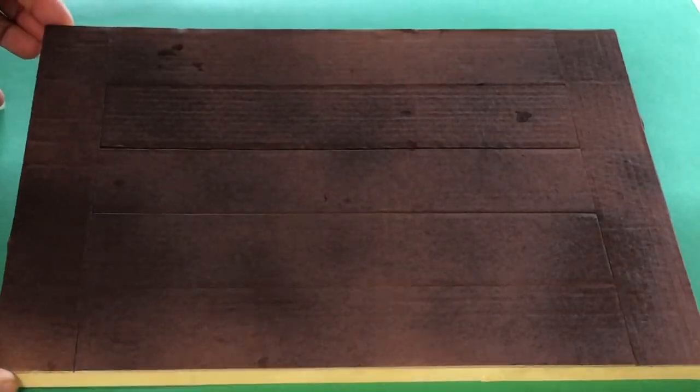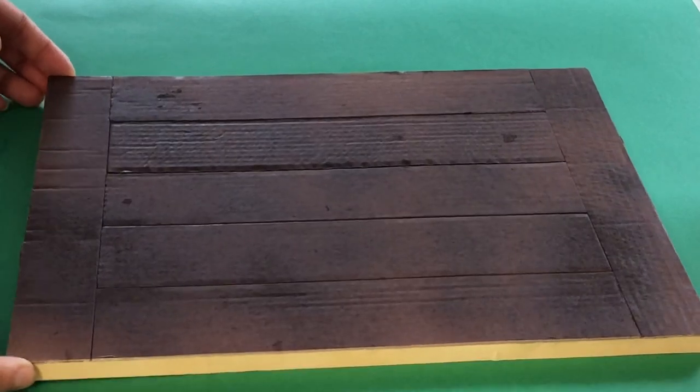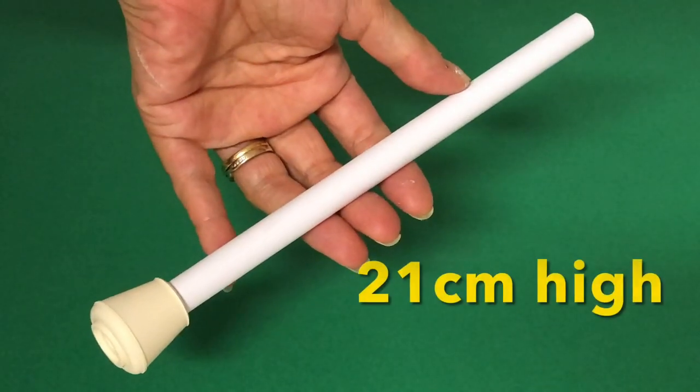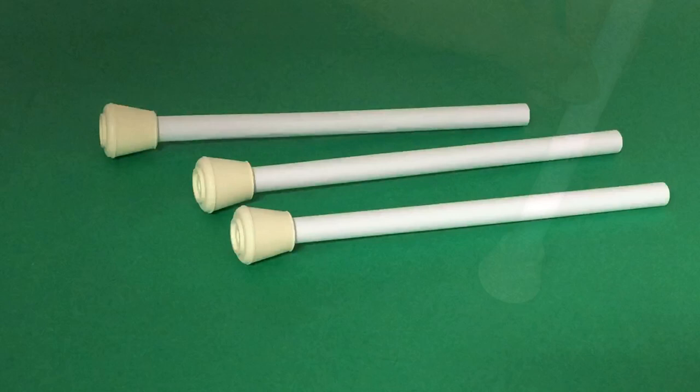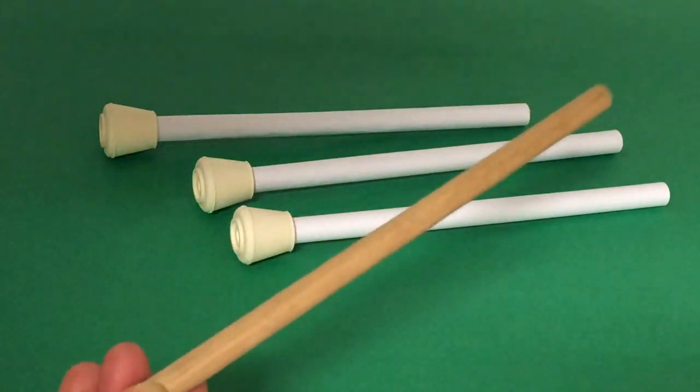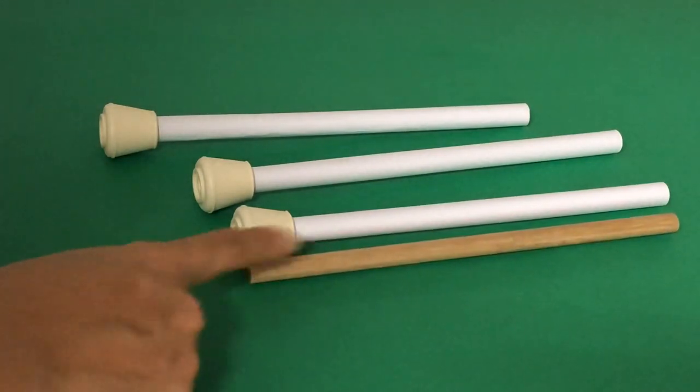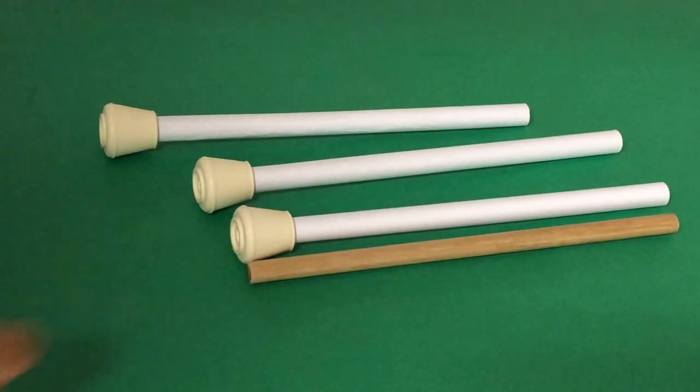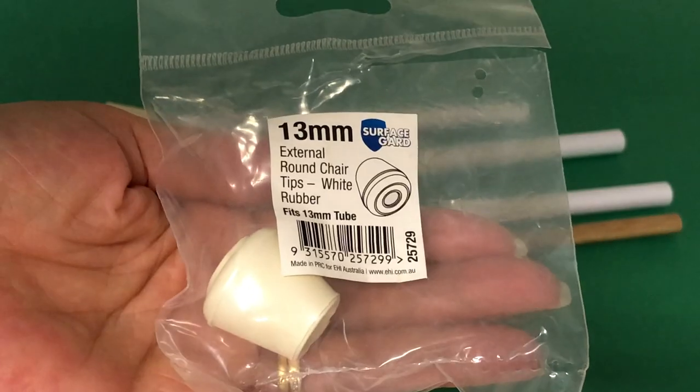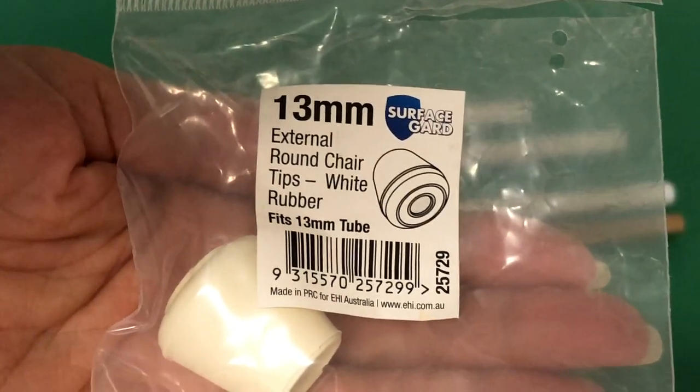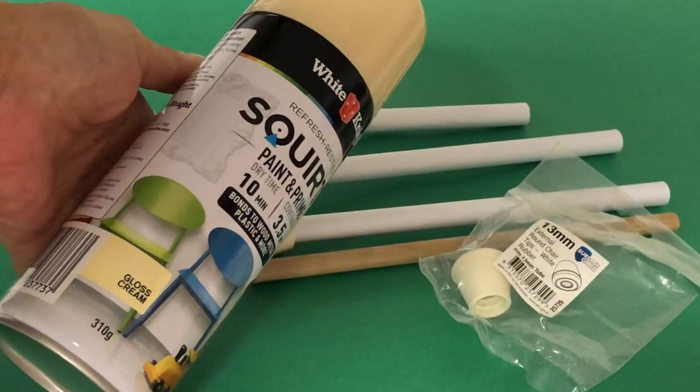For legs, we cut 9.5 millimeter dowel rods to 21 centimeters then roll them in computer paper to make them a bit thicker. If you don't have dowel rods, just roll paper tubes. Try making each leg three to four sheets of paper thick for strength and durability. The decorative feet are rubber chair tips from Bunnings. Paint everything cream.